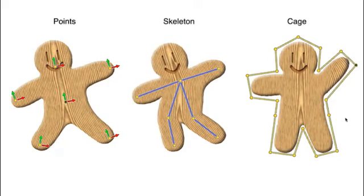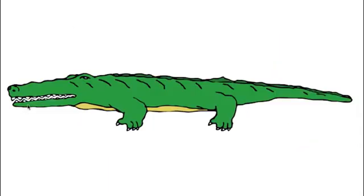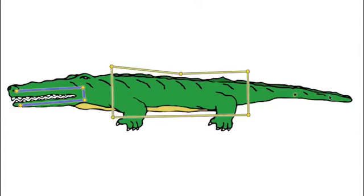External cages are increasingly popular because they provide high-quality results with many degrees of freedom. Each control handle type has an appropriate task. Allowing the user to freely choose and combine types of control is important.